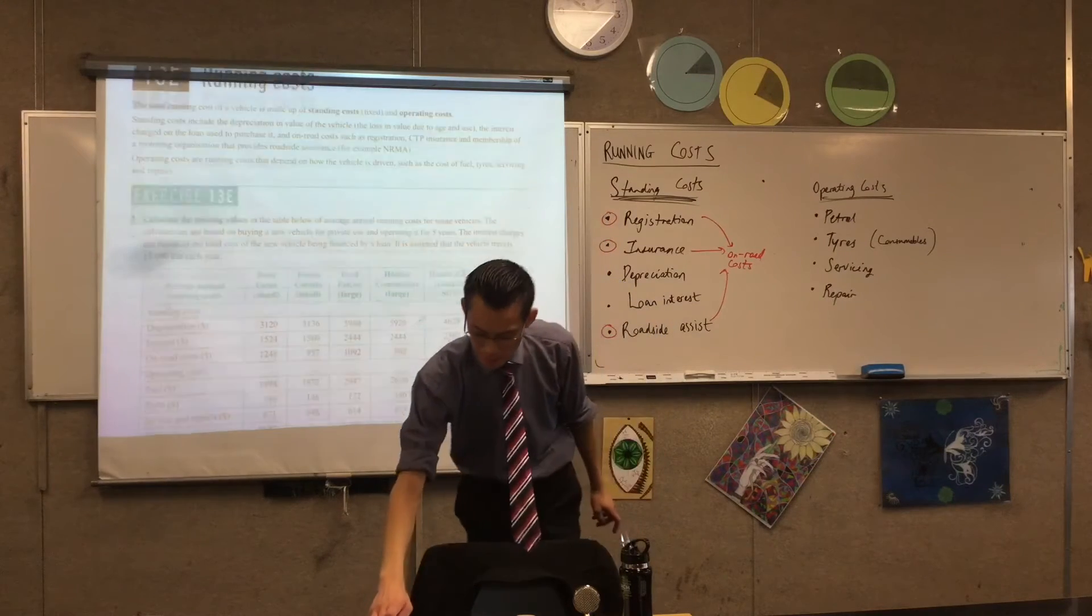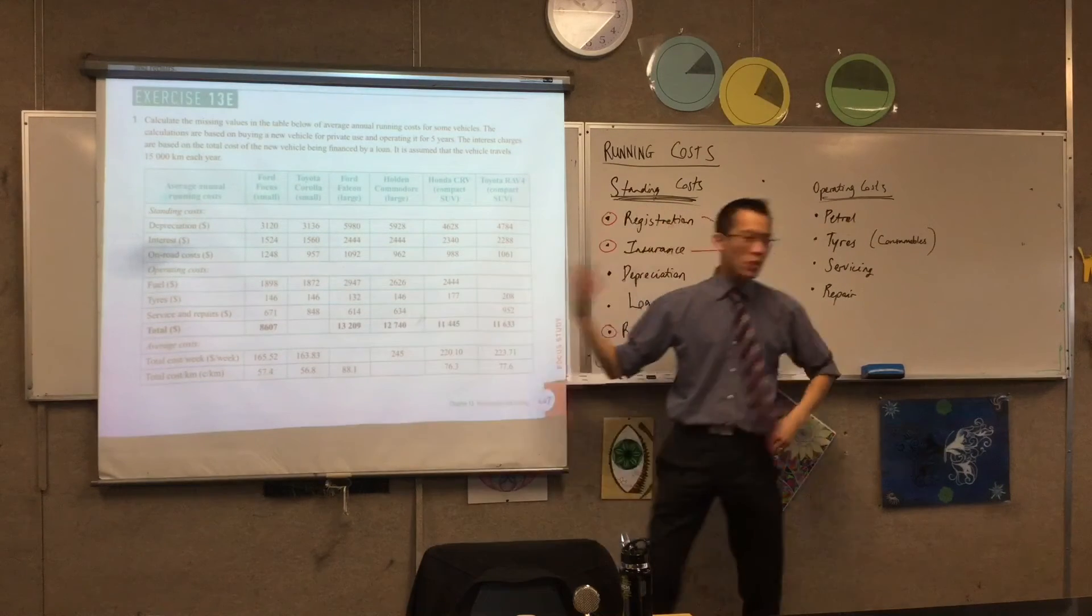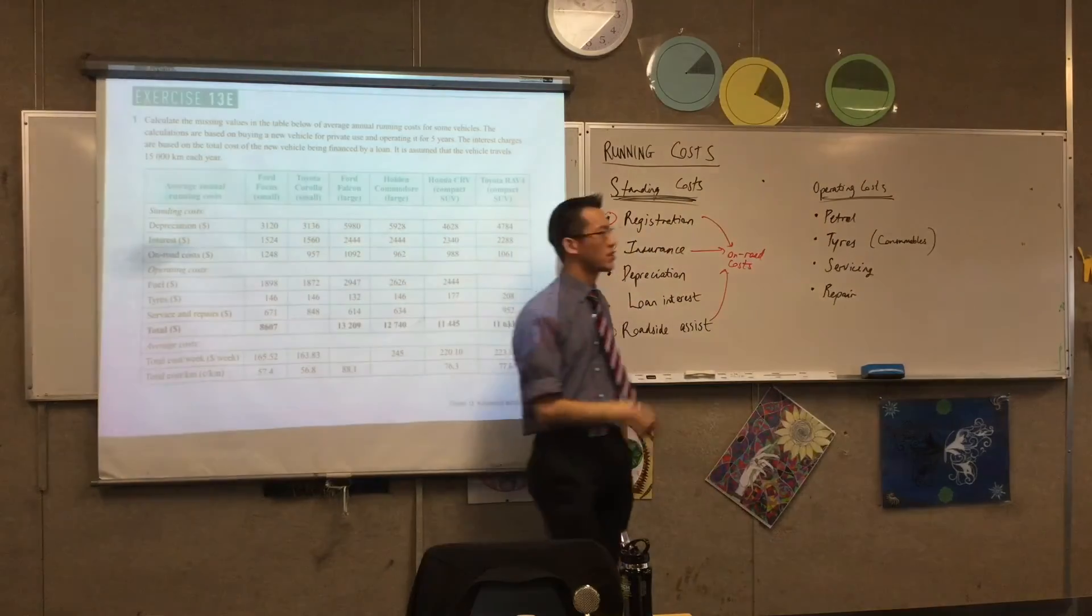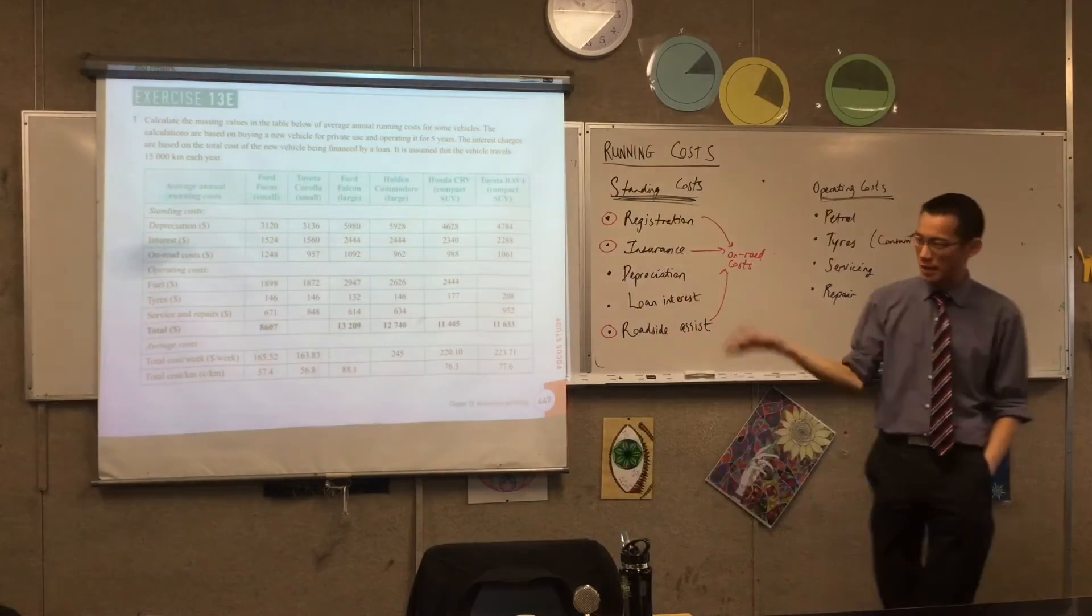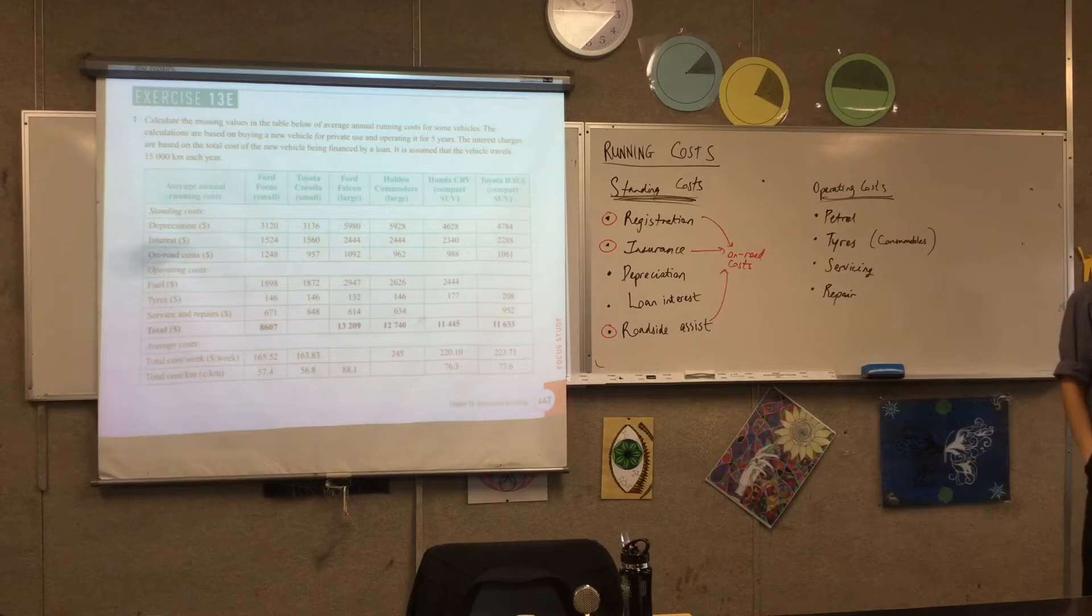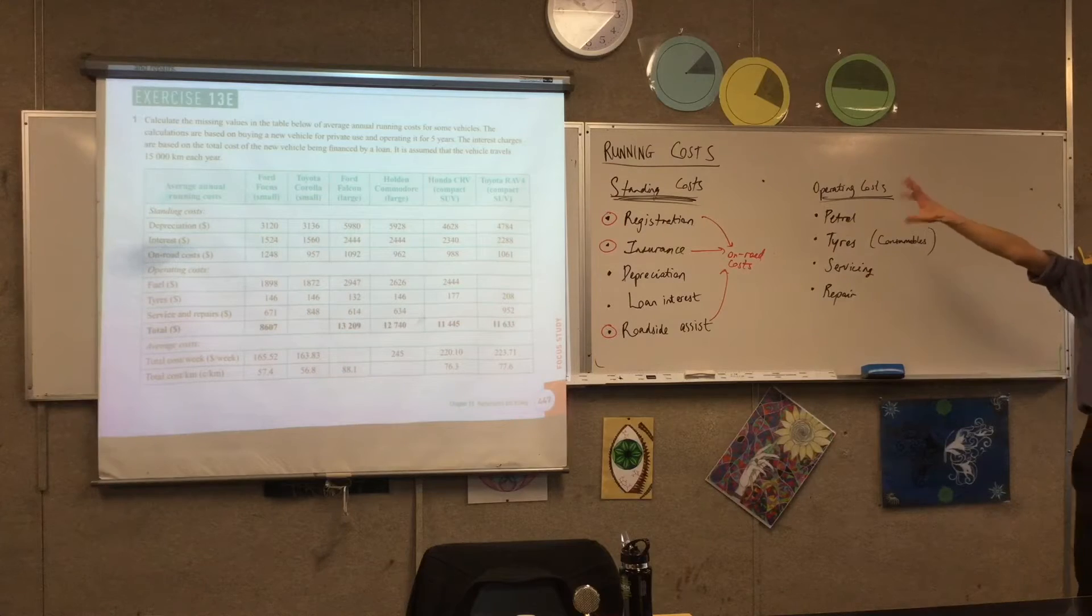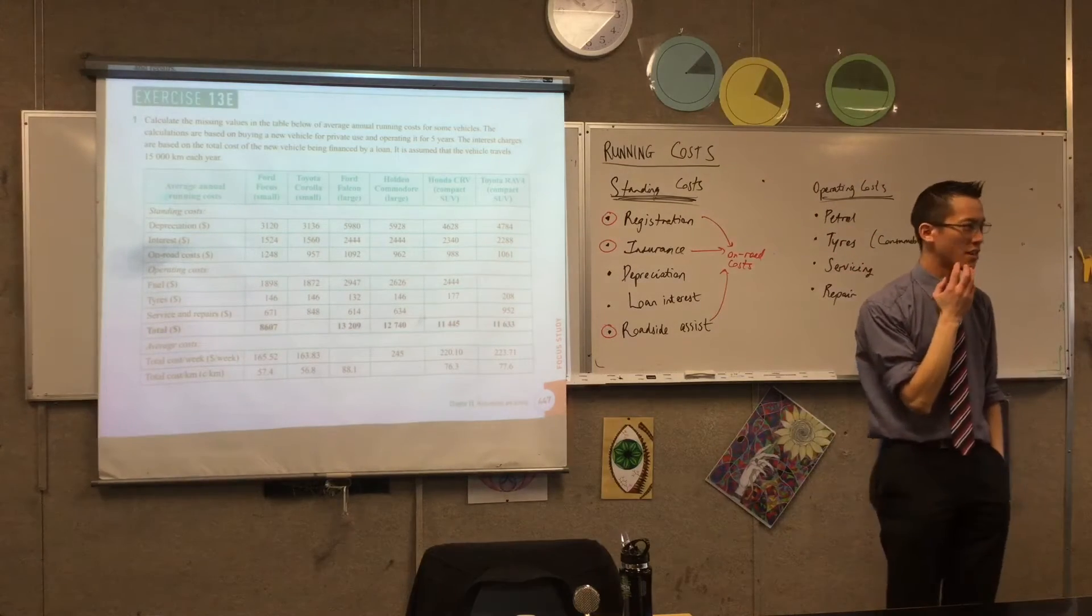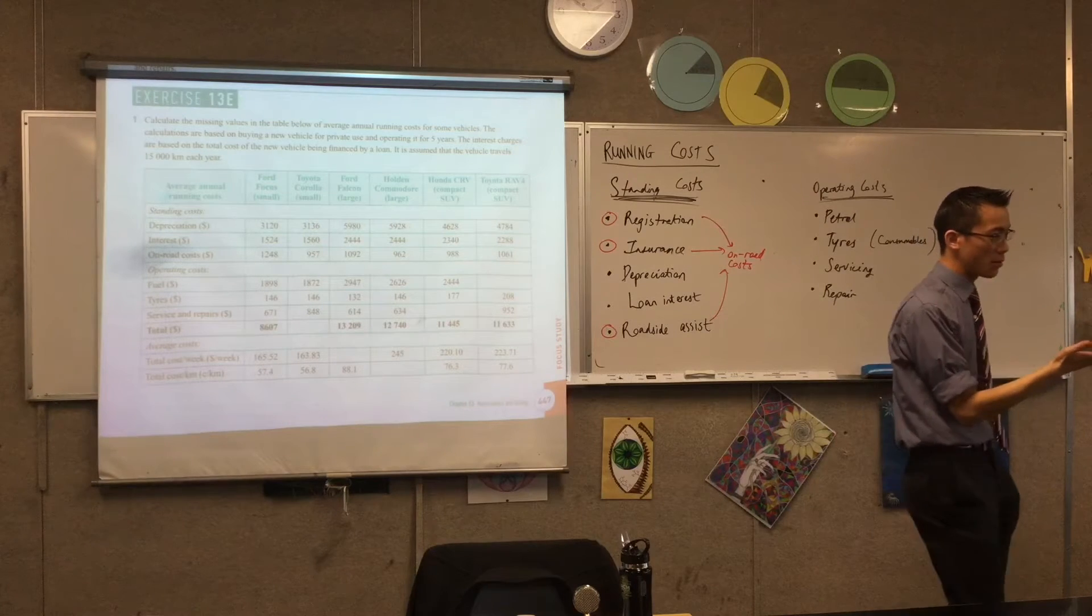The first thing I want you to see is what this is - a typical set of different vehicles and the different kinds of running costs associated with it. Obviously this is all fictional, but it's not outside the realm of possibility. Now, this is all annual stuff. Have a look carefully at what's provided to you. How far are these cars driving in a year? 15,000 kilometers in a year.